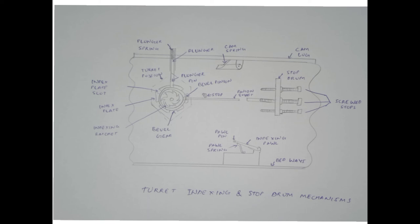The turret head rotates in the bearing fitted in the turret slide. Six equidistant radial slots are provided on the periphery of the index plate. A spring-loaded plunger is engaged in these slots one by one.